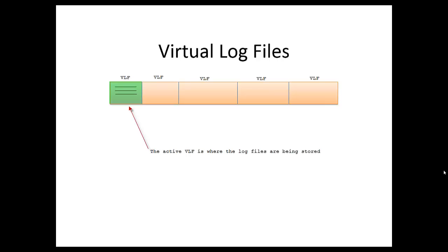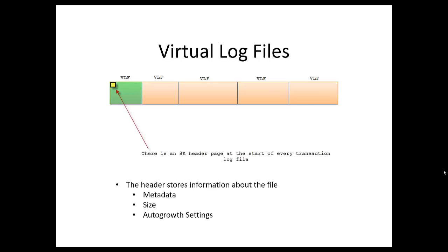So the active VLF is where the log files are being stored. All right, well that kind of makes sense. All right, this should be an easy one. So in each VLF there's a header page much like a data page, right? That's the start of every transaction in the log file. So what's the header store? Metadata, size, autogrow settings.